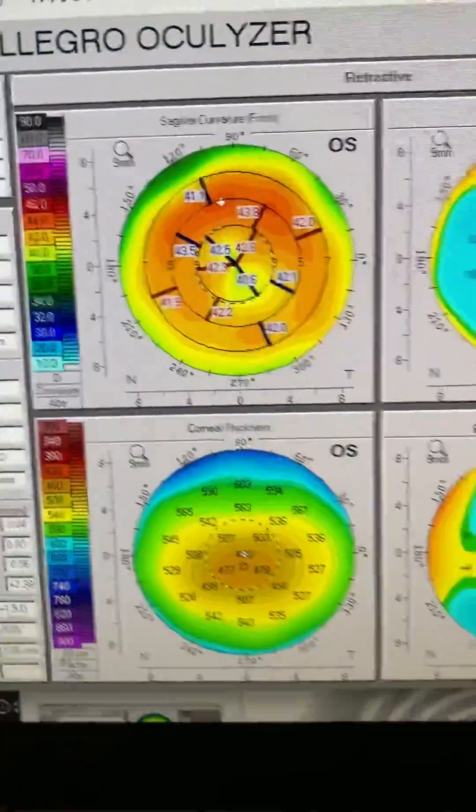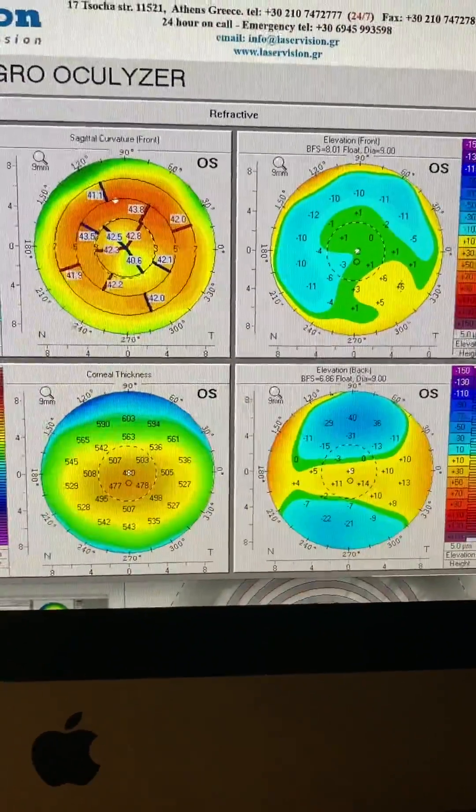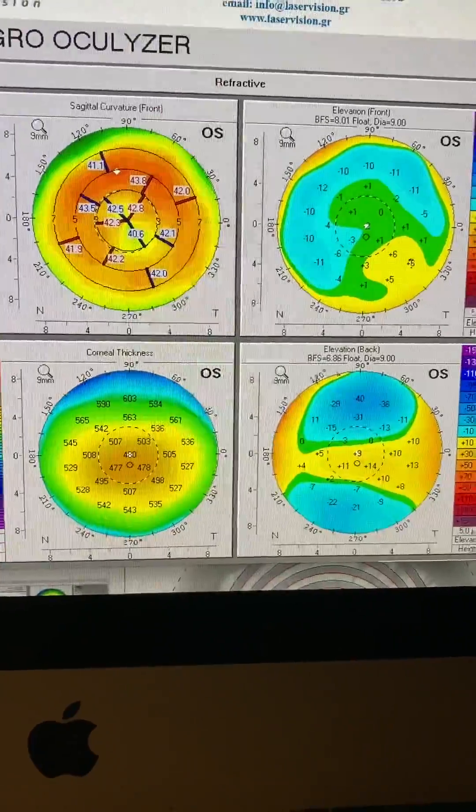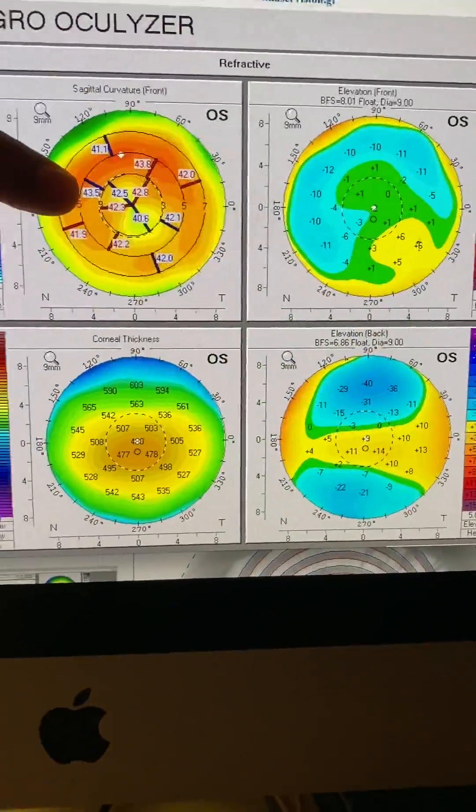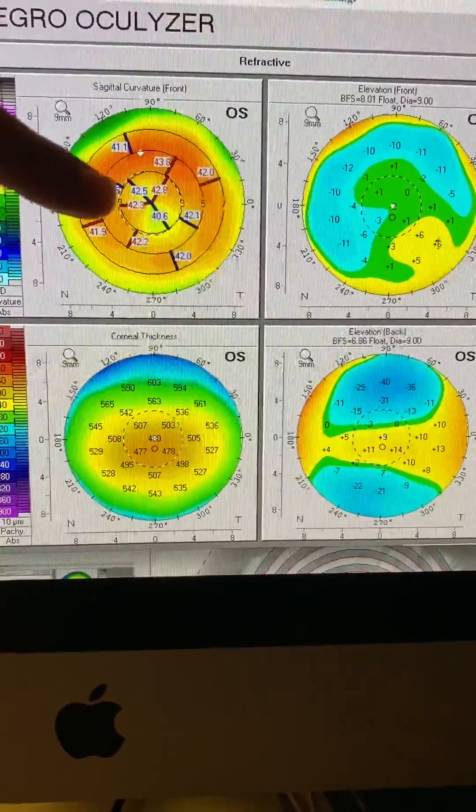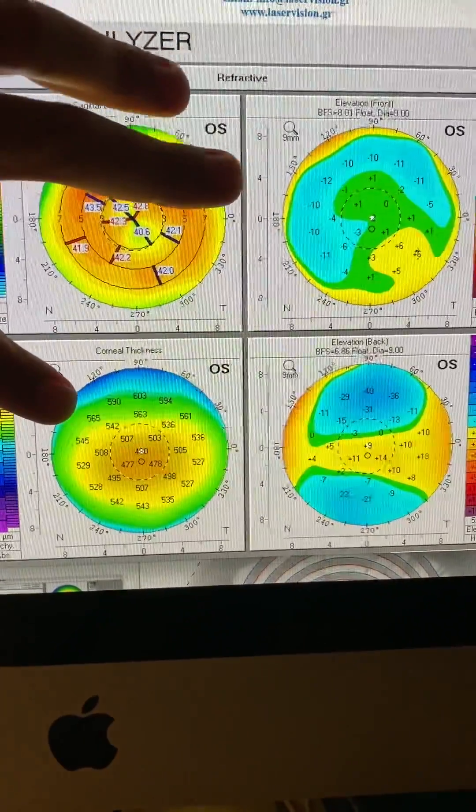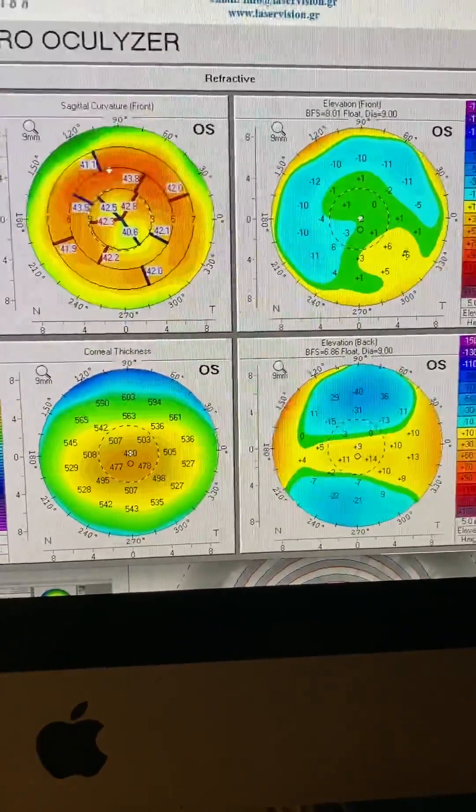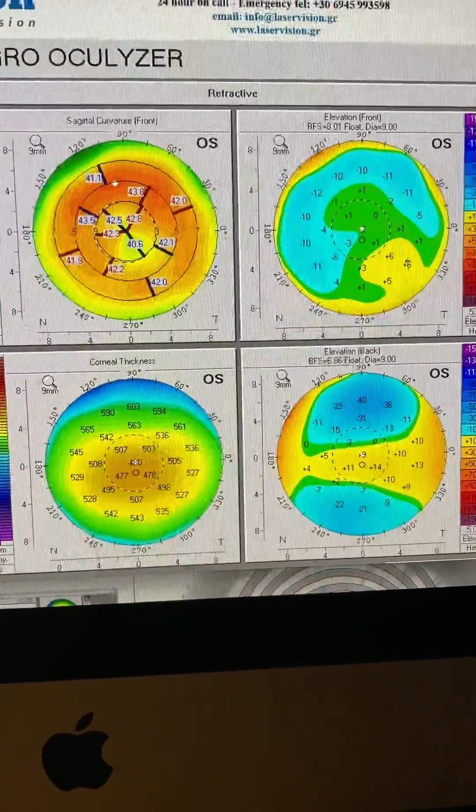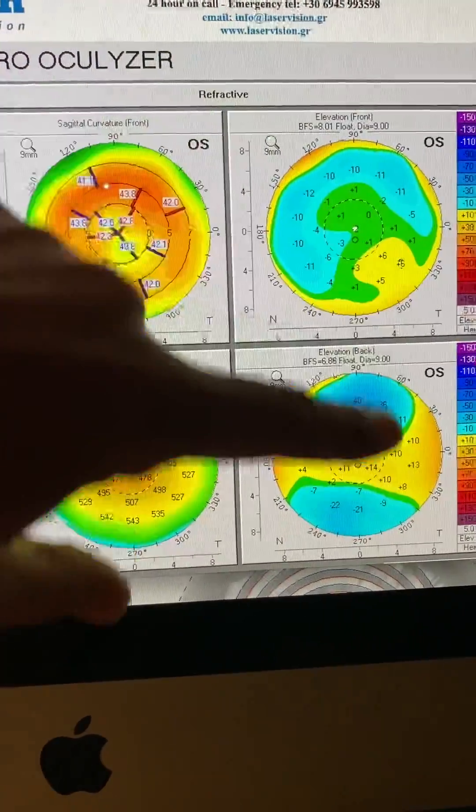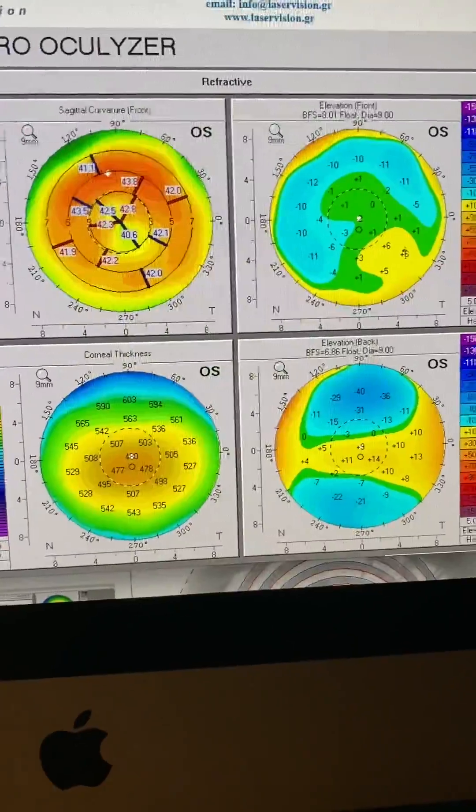And when we look at her corneas here, we can see that she had some silent keratoconus. The front part of the cornea, the keratometry does not look suspicious, but the thickness certainly looks suspicious. This is clear keratoconus in our assessment. And anterior elevation, posterior elevation are not remarkable.